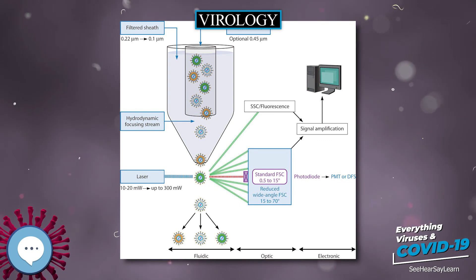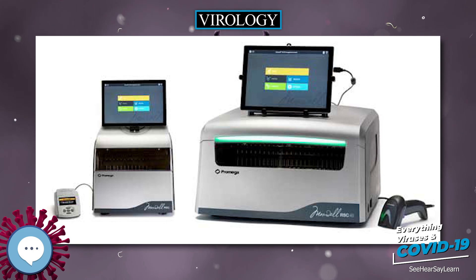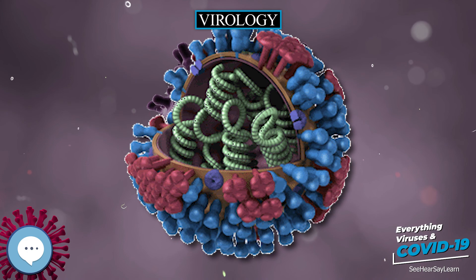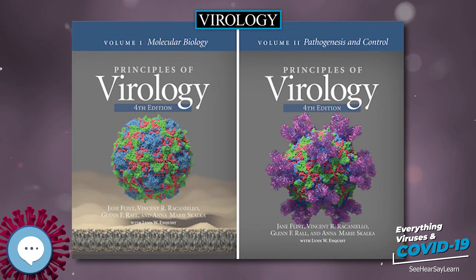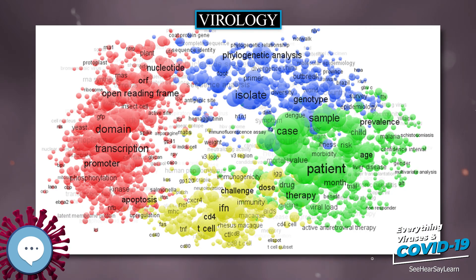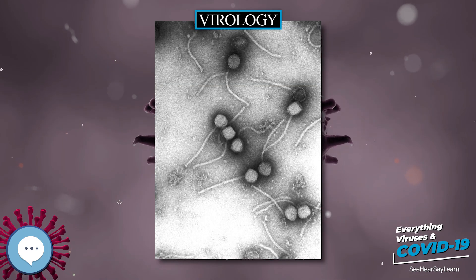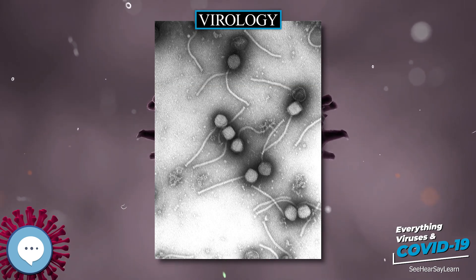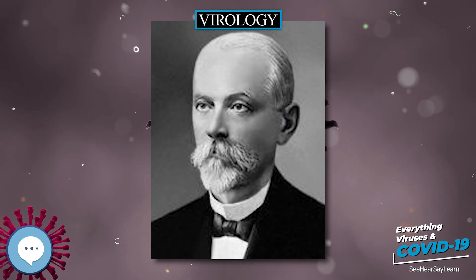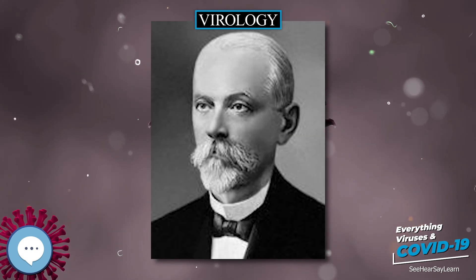In 2008, Sputnik virophage was described, the first known virophage; it uses the machinery of a helper virus to reproduce and inhibits reproduction of that helper virus. Sputnik reproduces in an amoeba infected by mamavirus, a relative of mimivirus and the largest known virus to date. An endogenous retrovirus (ERV) is a retrovirus whose genome has been permanently incorporated into the germline genome of some organism and is therefore copied with each reproduction of that organism. It is estimated that about 9% of the human genome has its origin in ERVs. In 2015 it was shown that proteins from an ERV are actively expressed in three-day-old human embryos and appear to play a role in embryo development and protect embryos from infection by other viruses.